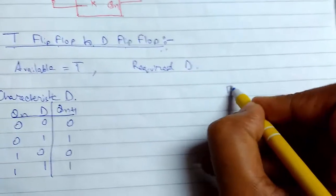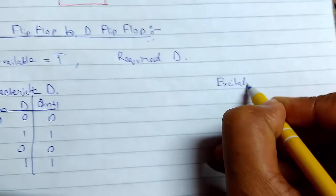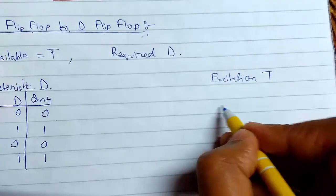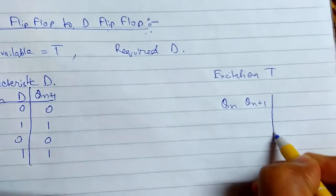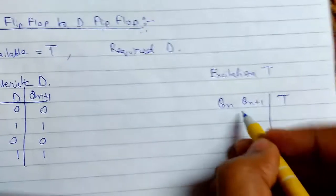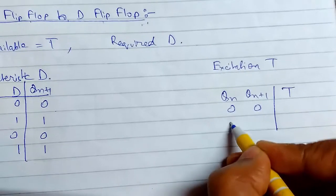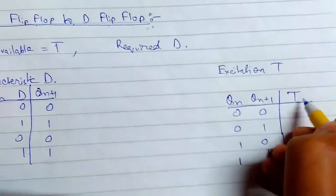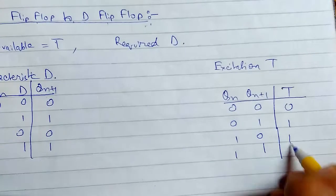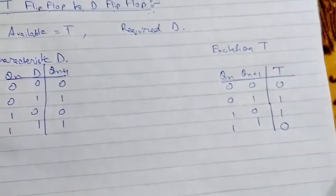Now you need to find the excitation table of T flip-flop. Excitation of T. So this will be Q1, Q1 plus 1. This is T. 0, 0, 0, 1, 1. So this was 0, 1, 1, 0. So hope you remember it.